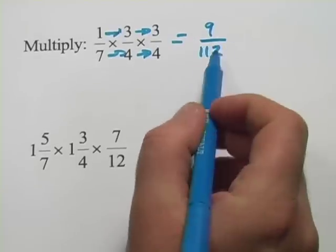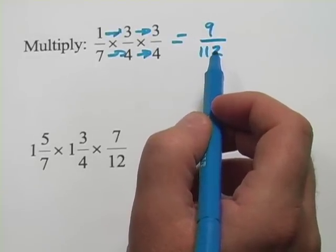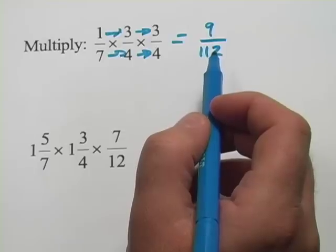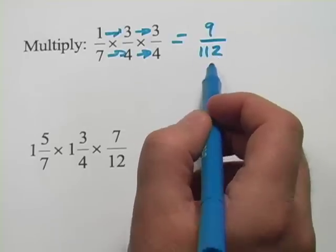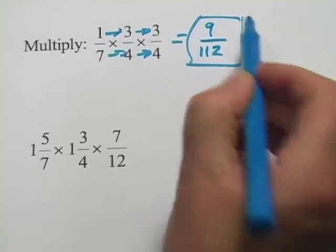And then we have to see if we can reduce this at all. Let's see if 112 is divisible by 3. It's not. So it looks like this may be in simplest terms. So 9/112 is our answer there.